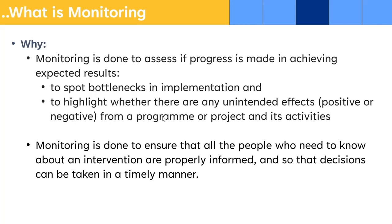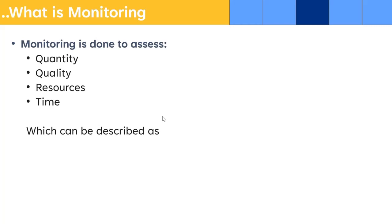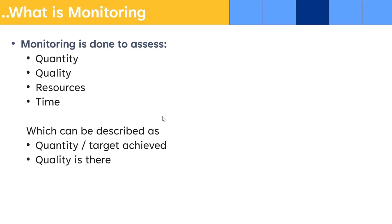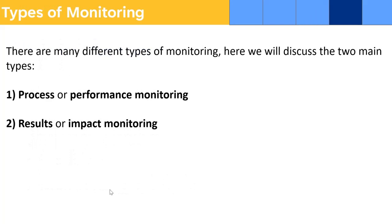All the stakeholders — the project management, the departments you are working with, the beneficiaries, everyone — should be informed so decisions can be taken in consultation with all of them. Monitoring is done to assess quantity, quality, resources, and time. This means: quantity target achieved, quality is there, resources are utilized properly, and achieved within the timelines. Whether the quantity is achieved, whether there is quality — not just the number of people trained but quality in the training — resources are utilized properly, and done within the timeline. These four key factors you need to keep in mind while doing the monitoring.